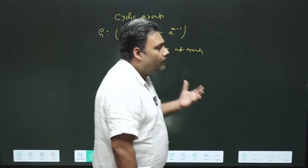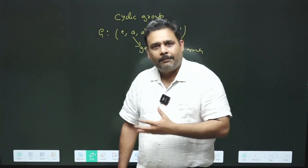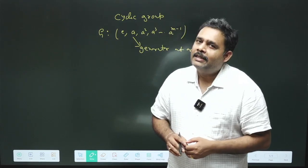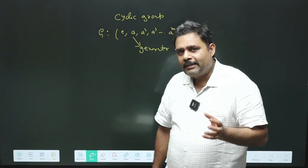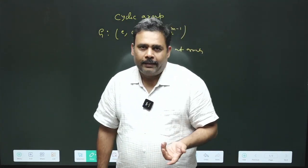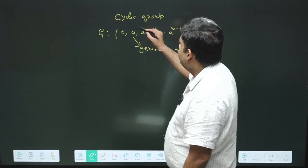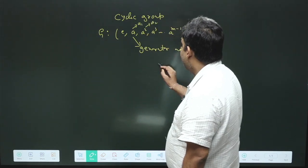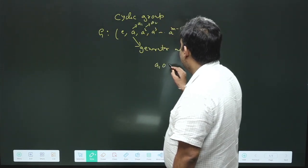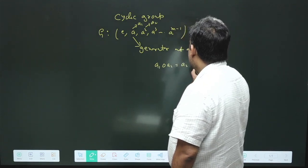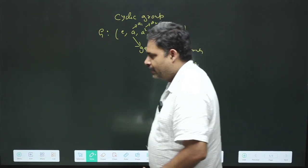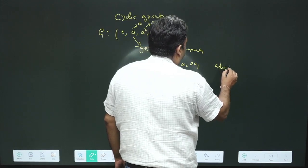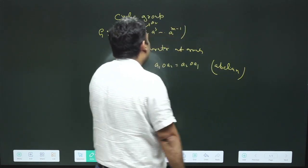So if some collection of elements has this type of property, then they can be assumed to be a cyclic group. And it is very interesting that cyclic groups are always abelian in nature, so they are commutative. Suppose this is A1 and this is A2, then A1 operation A2 equals A2 operation A1. So cyclic groups are always abelian and commutative.